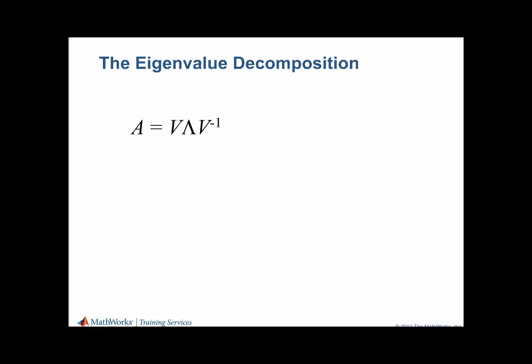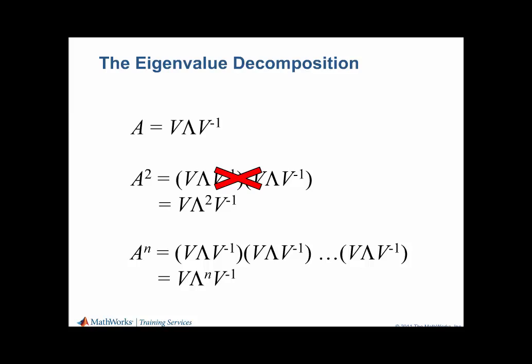Similarity transforms can simplify many calculations, such as matrix powers. Here we see that when we square A, the interior terms V inverse times V will cancel one another out, and we will then square Lambda. Because Lambda is diagonal, Lambda squared is calculated by taking the powers of the diagonal elements. Extending this, we see that A to the n can be given as a similarity transform of Lambda to the n. This is particularly useful as n gets very large. Firstly, because Lambda to the n takes the same effort to calculate as Lambda squared. And secondly, because Lambda to the n starts to take a very simple form as n gets large.